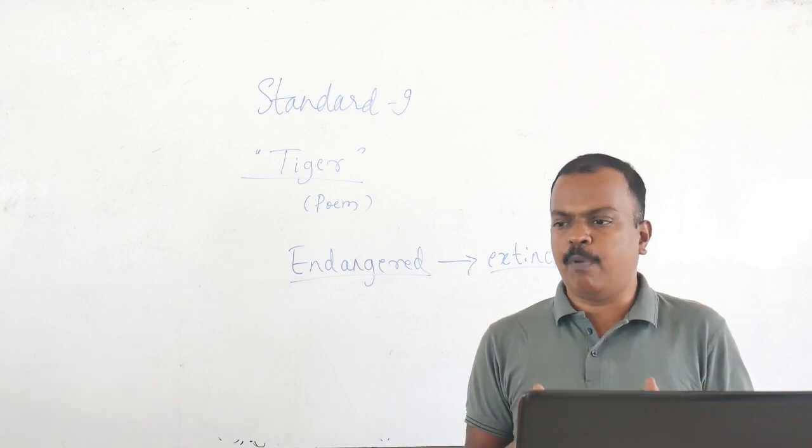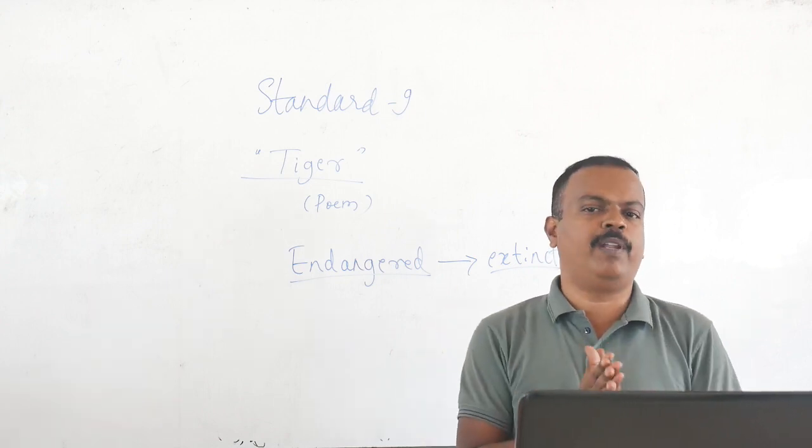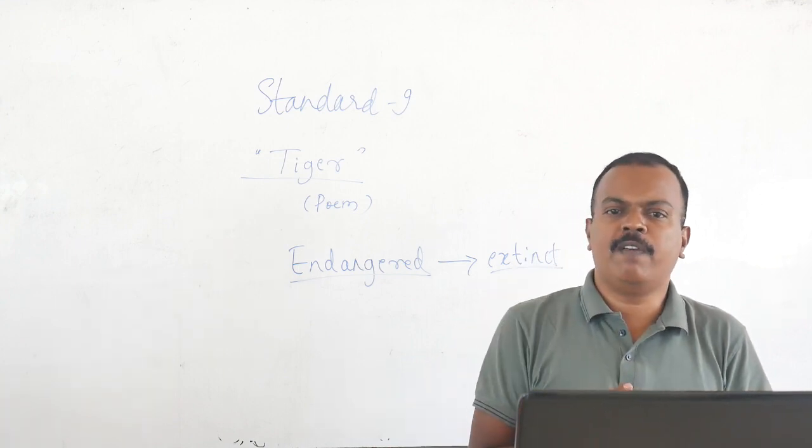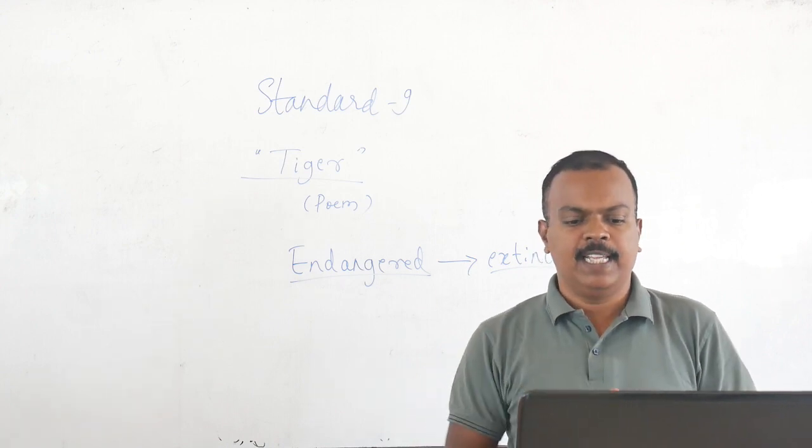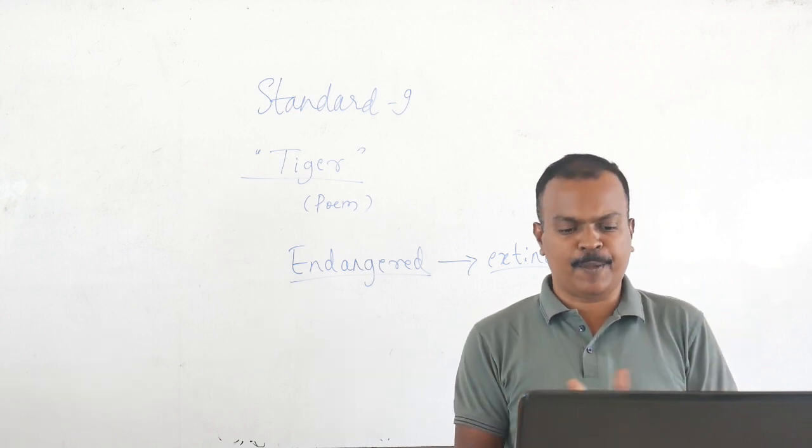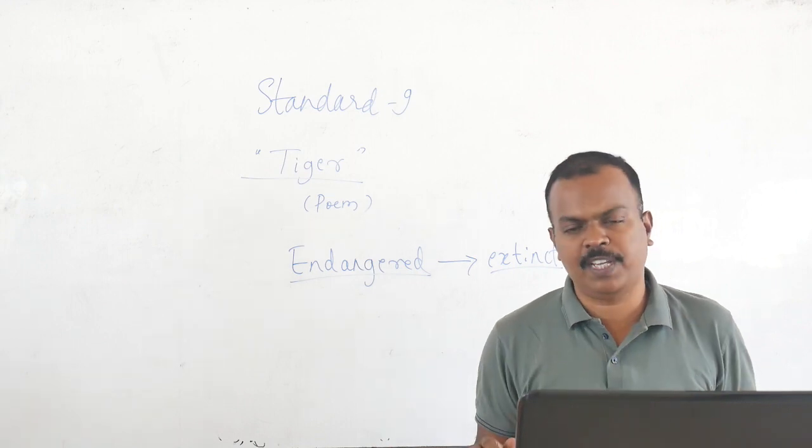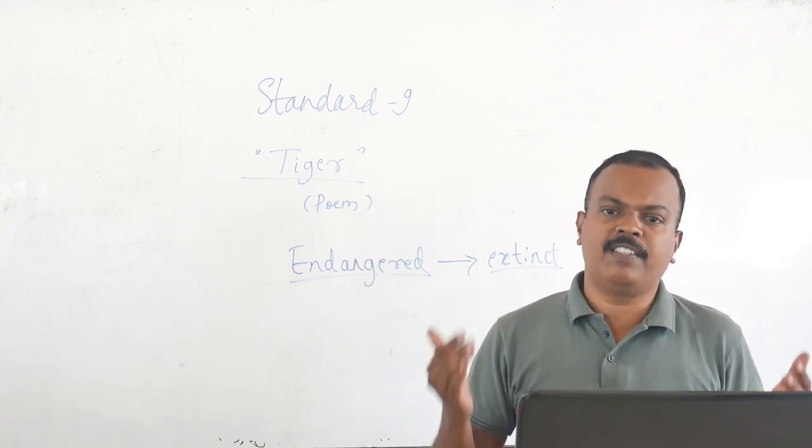We are not talking about the tiger population in India or any particular country. We are talking about tiger population in the entire world. So that 4,000 is very precious for us. Because if we lose any more tigers, then very soon this endangered animal will become extinct. So there are people and organizations and governmental agencies who are trying very hard to protect and increase the number of tigers.